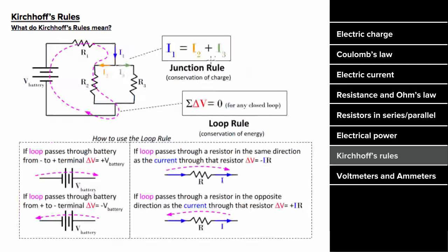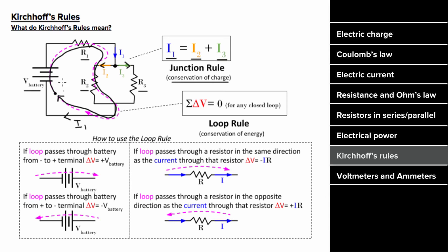In a complicated circuit with a battery and three resistors, the total current i1 flowing into a junction equals the total currents i2 and i3 coming out, since no charge is created or destroyed. When those currents recombine, the total current flowing out is again i1. Following a closed loop, the sum of all voltages must equal zero: the battery voltage minus the voltage drop across the first resistor minus the voltage drop across the second resistor equals zero.